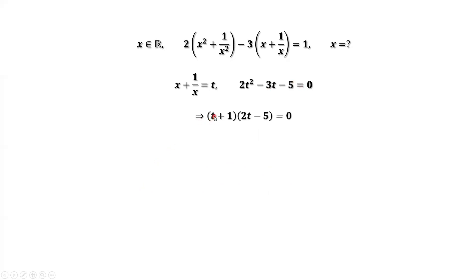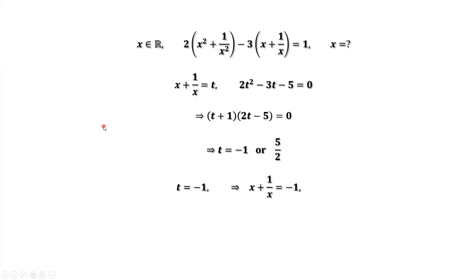You can factor the left-hand side or use the quadratic formula to solve this. The first solution is t equals negative 1, and the second solution is t equals 5 over 2. If t equals negative 1, that means x plus 1 over x equals negative 1. Solving this equation, we may find the value of x.